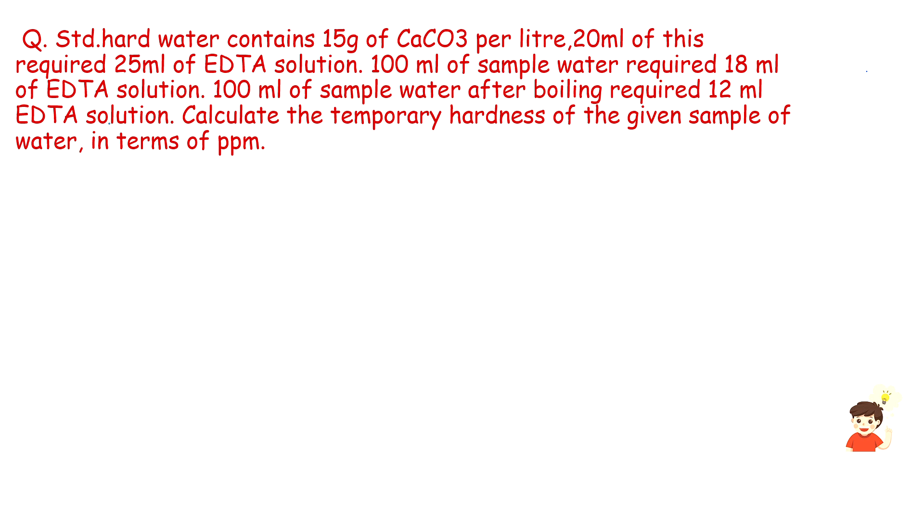In the third class, we will learn the general method of hard water. The standard hard water contains 15g of CaCO3 per liter. 20ml of this required 25ml of EDTA solution. 100ml of sample water required 18ml of EDTA solution. 100ml of sample water after boiling required 12ml of EDTA solution. Calculate temporary hardness of the given sample water in terms of ppm. Here is a question.